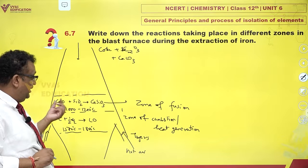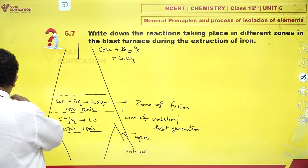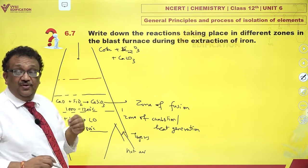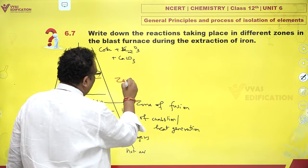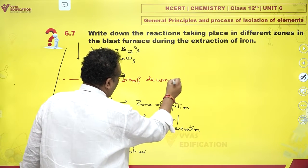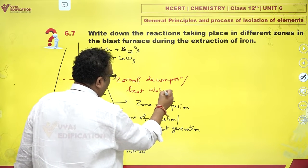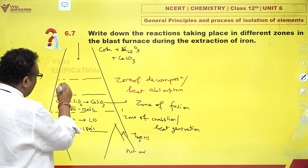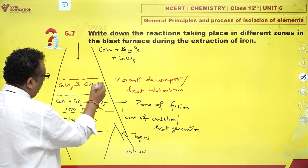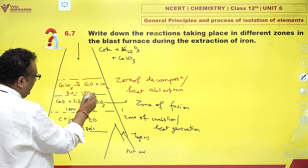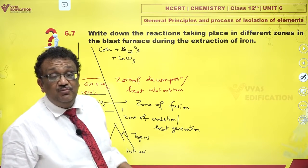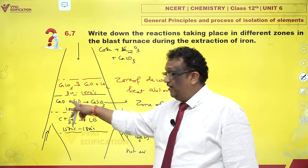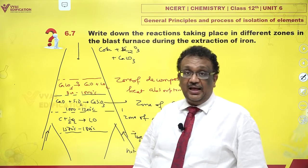The zone of fusion removes gangue or silica as the more fusible calcium silicate. Above this is the zone of decomposition, also called the zone of heat absorption. This involves an endothermic reaction where calcium carbonate decomposes to CaO plus CO₂, occurring at 800 to 1000 degrees Celsius. The quick lime produced then descends and reacts with silica to form the fusible slag, calcium silicate.